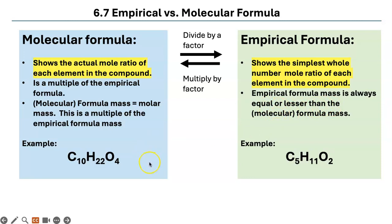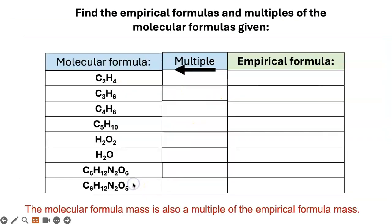The molecular formula mass, or molar mass, is a multiple of the empirical formula mass. And the empirical formula mass is always equal to or lesser than the molecular formula mass. Here is an example. To convert molecular formula, you divide it by a factor to get the empirical formula. To convert empirical formula or its mass to molecular formula, you multiply by a factor. Write this table down.